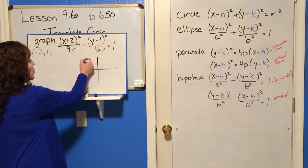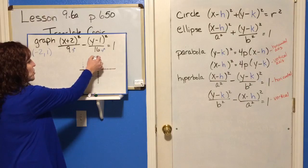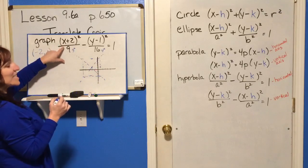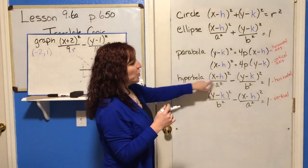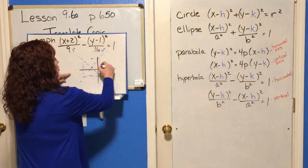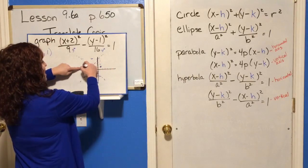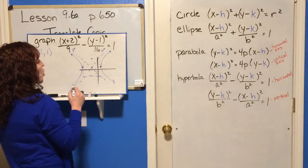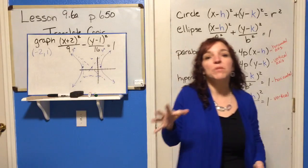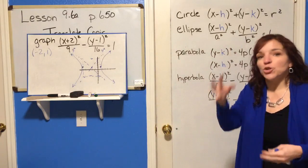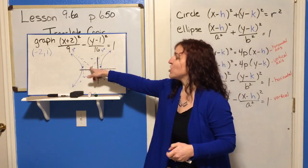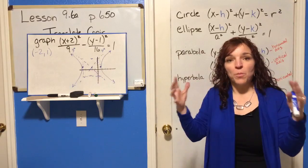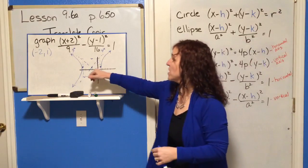Remember with a hyperbola, you draw your imaginary box, and then the diagonals of that box make your asymptotes. Because the X term is first, you've got a horizontal axis of symmetry, which means the graph starts at the left and right vertices and opens around those asymptotes. When you're graphing all of these, it's exactly the same as before — the only difference is instead of starting at the origin, you find your H, K to establish the center, then count left, right, up, and down from there.